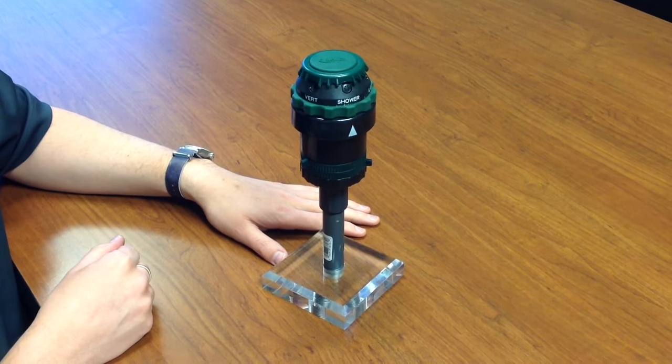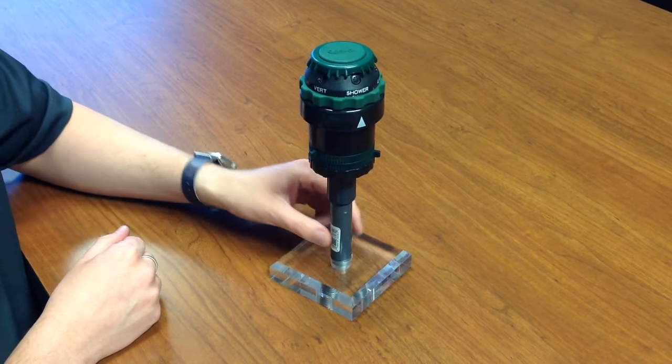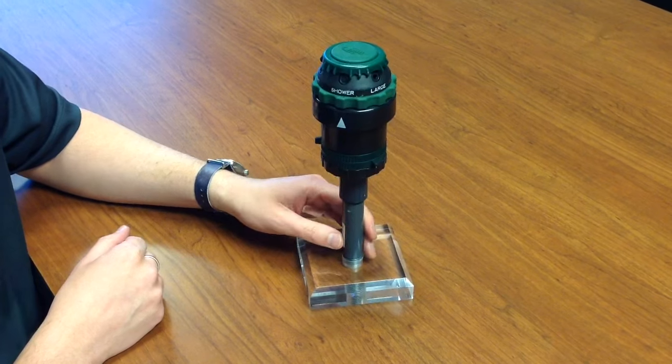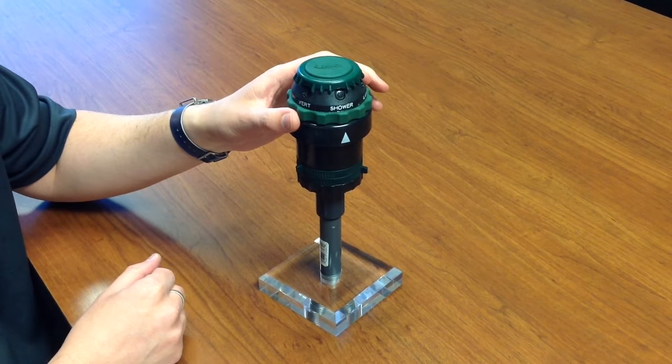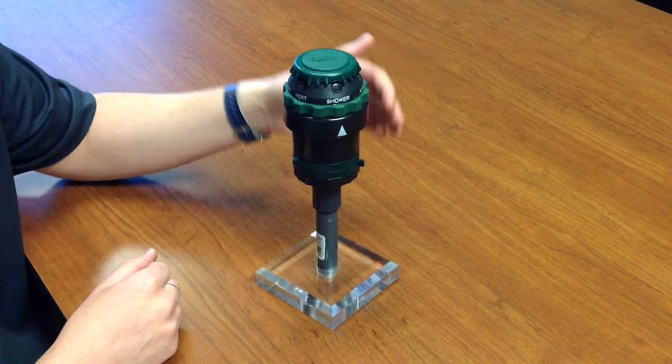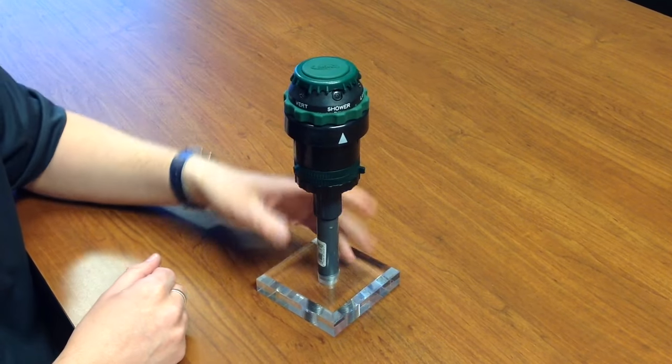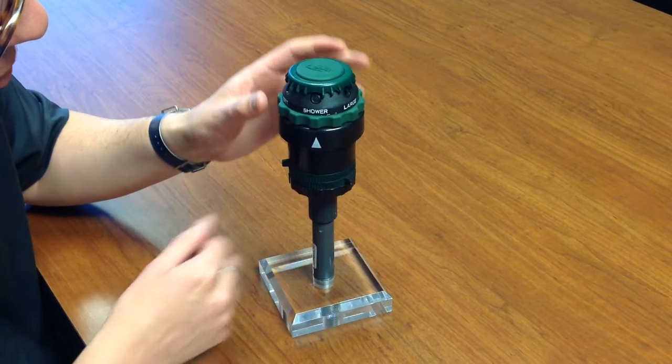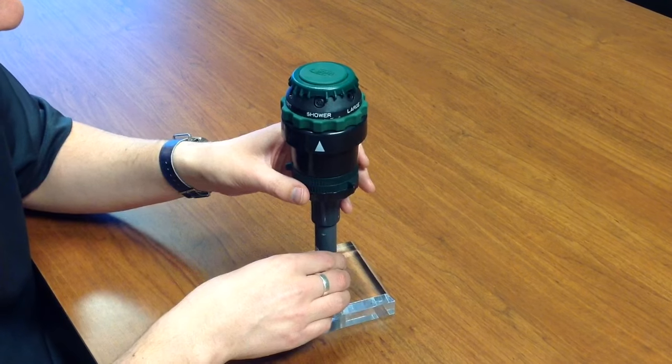All right, we're here to show how to adjust the H206 sprinkler from Orbit. This has multiple patterns and various different adjustments for spray diameter as well as spray distance. And it's very easy to adjust once you get the hang of it.